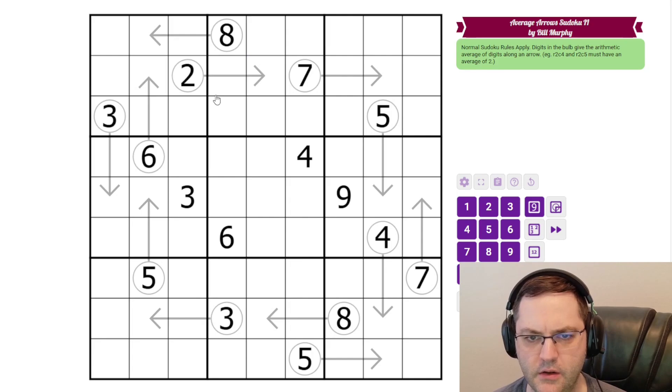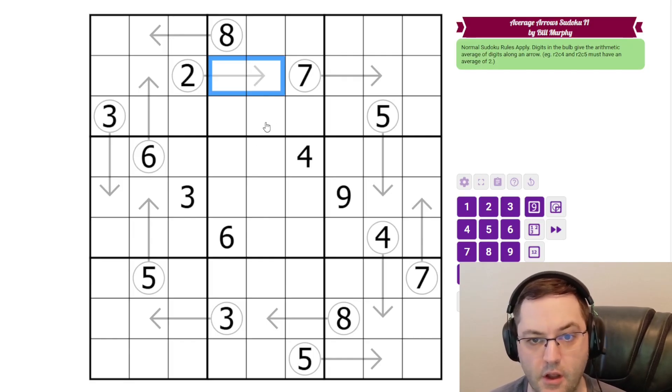Some of you will find using the sums easier, in part because you're probably more familiar with, say, two cells summing to four, what that has to be. Some will find the average is easier to think about. I'd be kind of curious in the comments what you find more natural. But anyway, those are the rules.